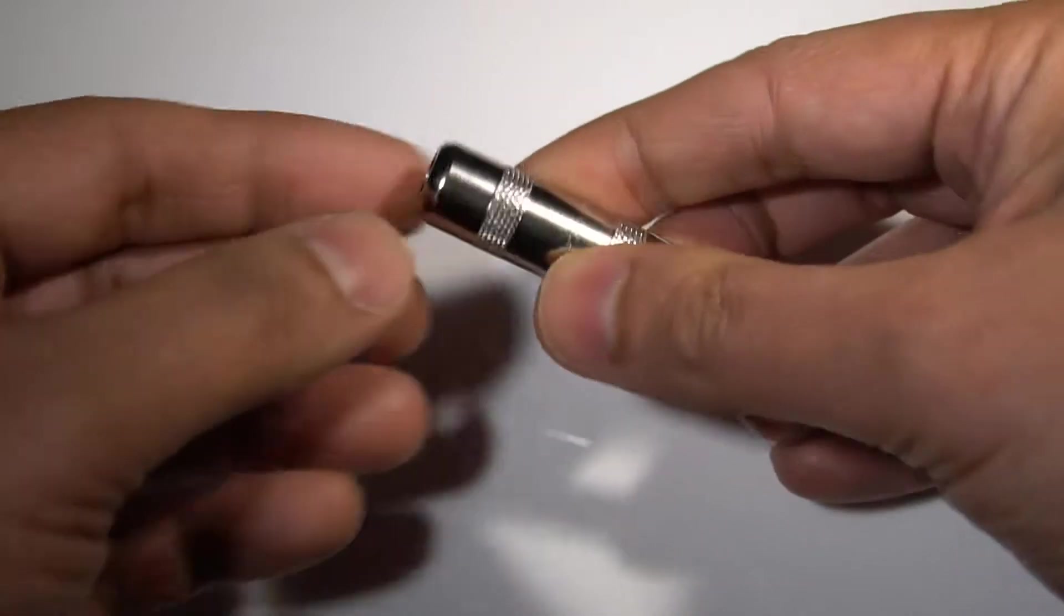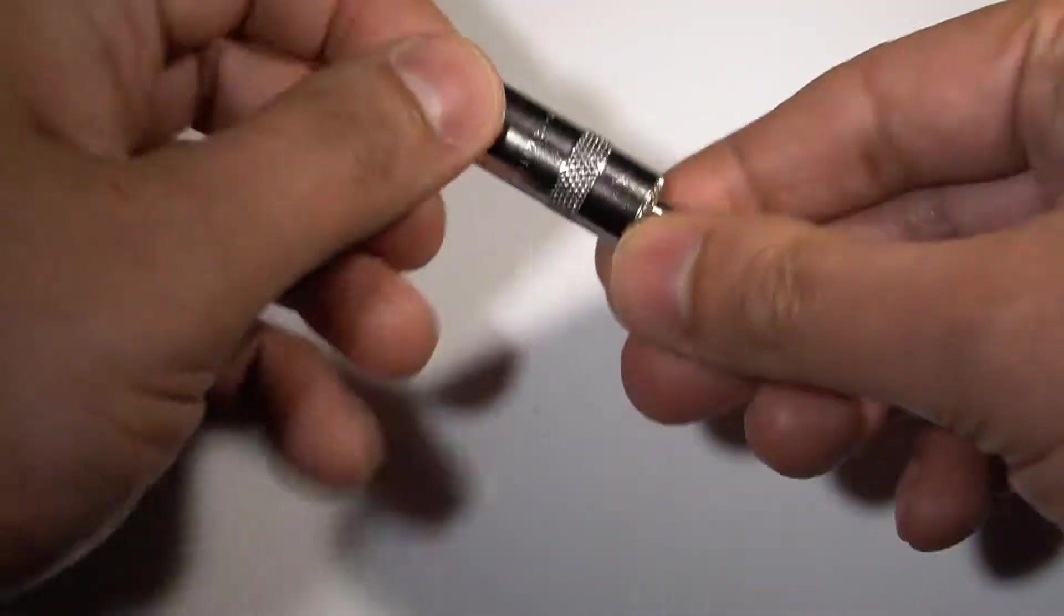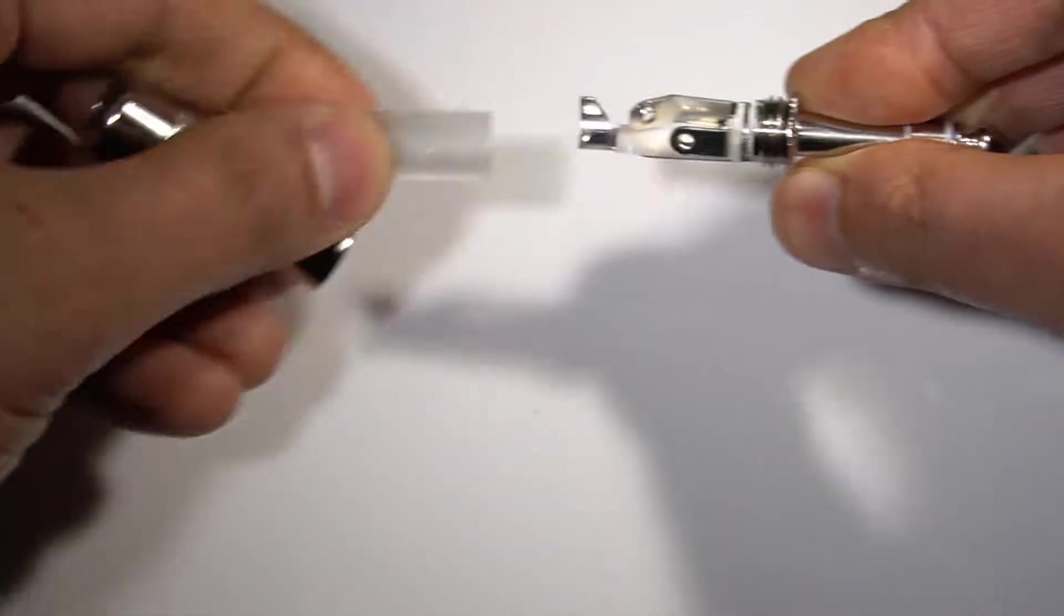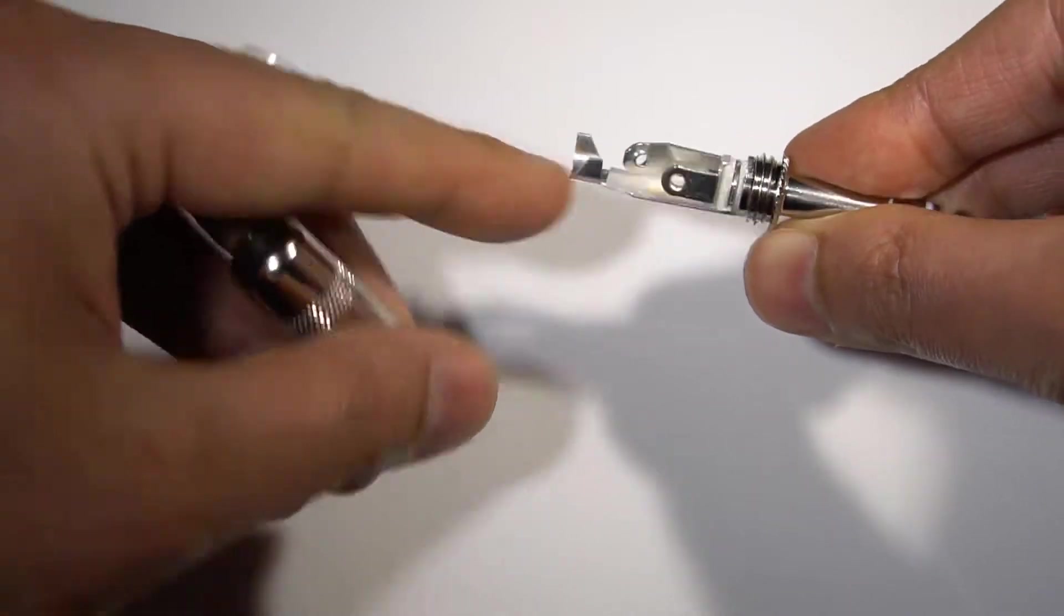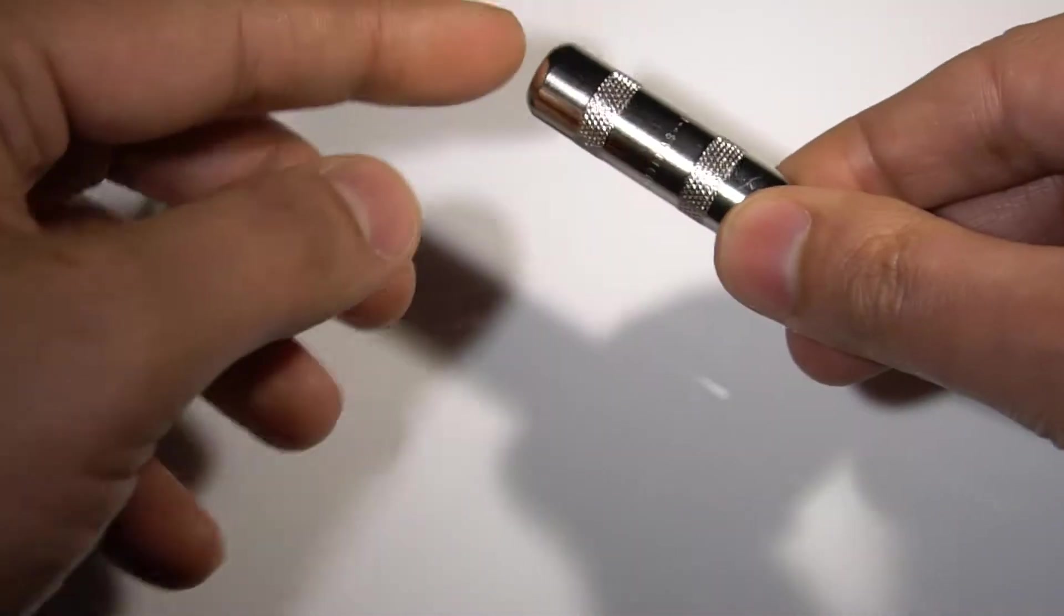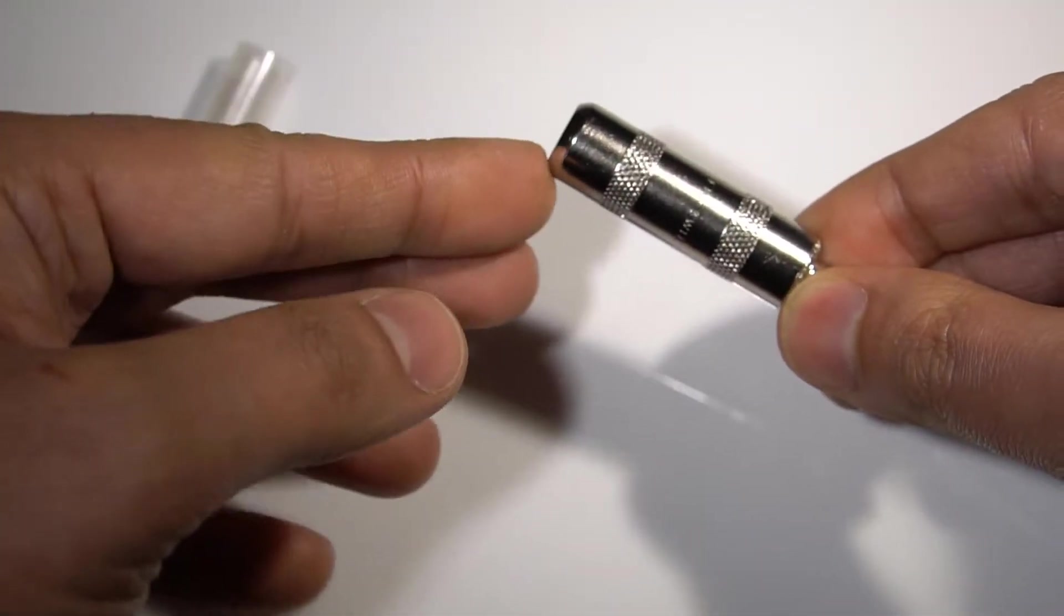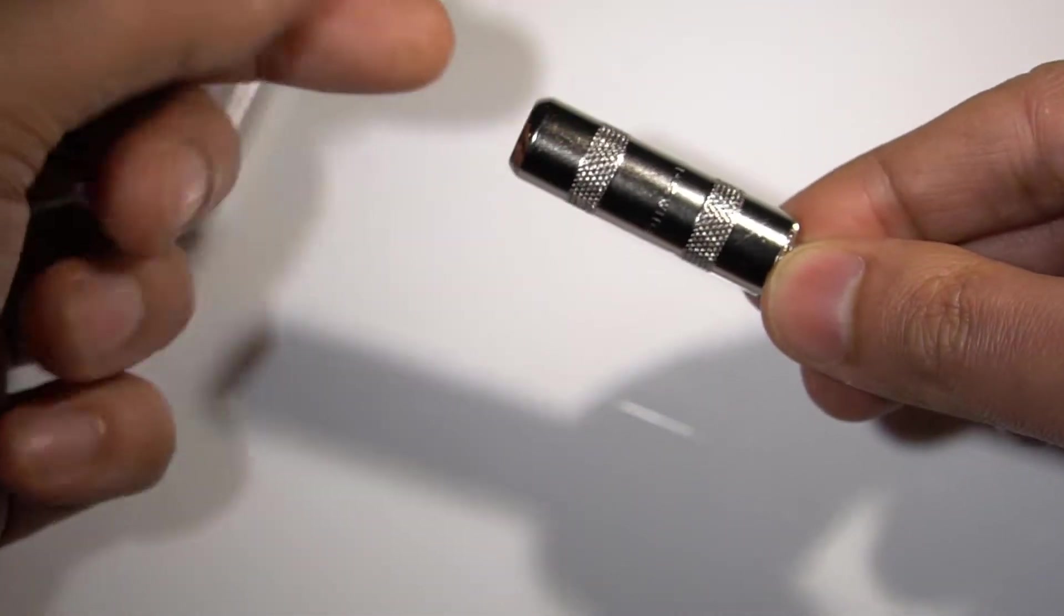I actually don't mind that this has not got strain relief on the outside, because obviously the wire is secured here anyway. But if you did want to prevent the wire bending sharply at this edge here, you could always put some heat shrink around here as well.